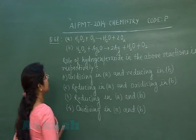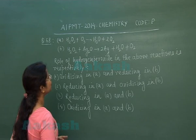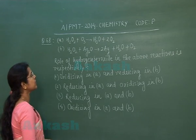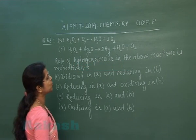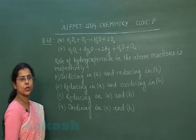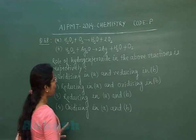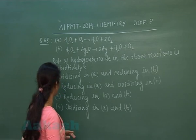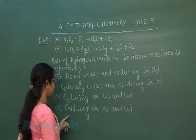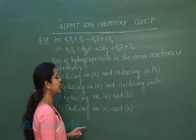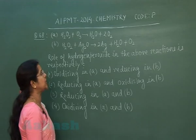Question number 68: The first reaction is H₂O₂ + O₃ → H₂O + 2O₂. The second reaction is H₂O₂ + Ag₂O → 2Ag + H₂O + O₂. The role of hydrogen peroxide in the above reactions respectively: the first option is oxidizing in A and reducing in B; the second option is reducing in both A and B; the third option is reducing in A and B; the fourth option is oxidizing in both A and B.